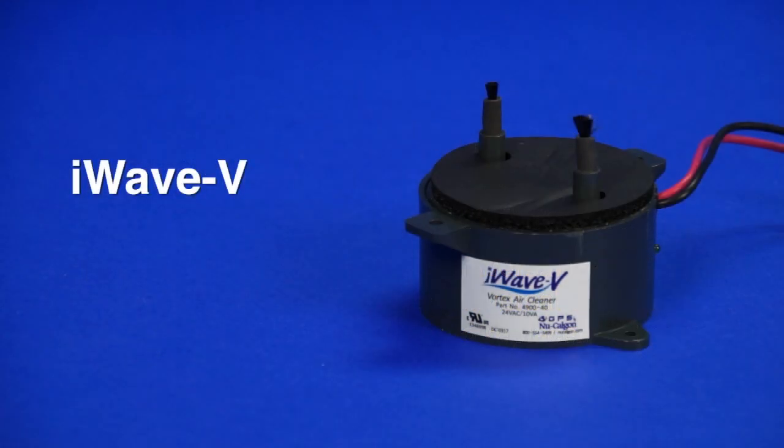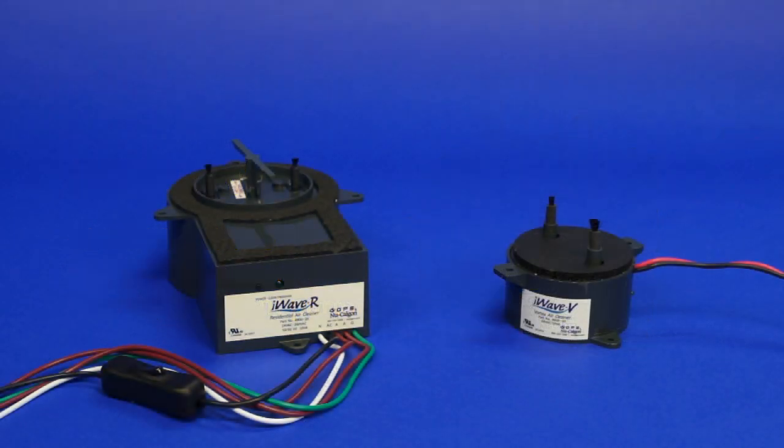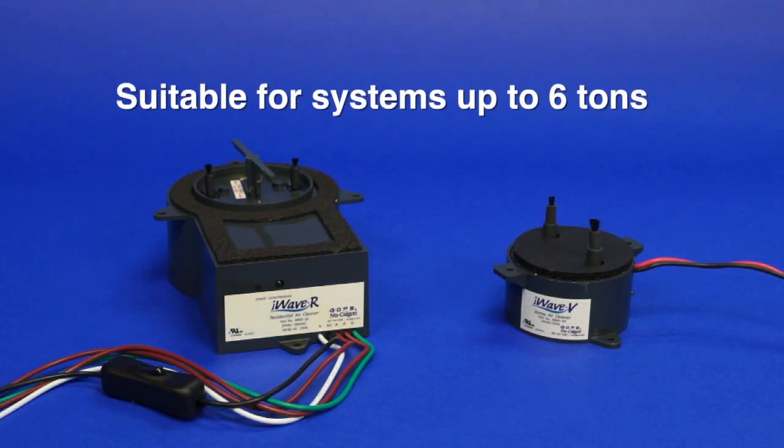An alternative low-maintenance option is the iWave V with 24 VAC voltage, universal mounting, and no replacement parts. Both products are suitable for systems up to 6 tons.